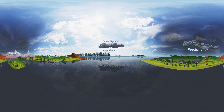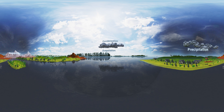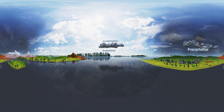Precipitation. When the air around the clouds is cool, the heavy drops of water fall in the form of rain. When the air around the clouds is very cool, these drops of water fall in the form of snow. This process of falling of rain or snow from the clouds is called precipitation.